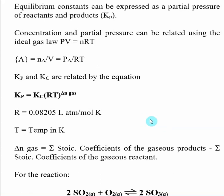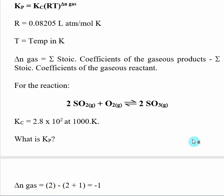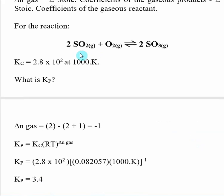So delta n gas is the summation of the stoichiometric coefficients of the gaseous products minus the summation of the stoichiometric coefficients of the gaseous reactants. So if we are given an actual reaction, we need to look at the subscript of each species involved in there, and we only look at gases. And then we say, what is the stoichiometric coefficient in front of each of those? And then what we do is we add up all the stoichiometric coefficients of the gases in the products.